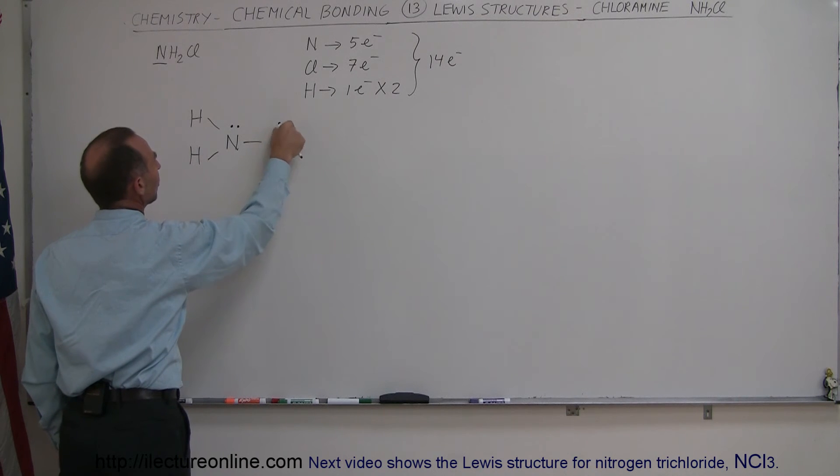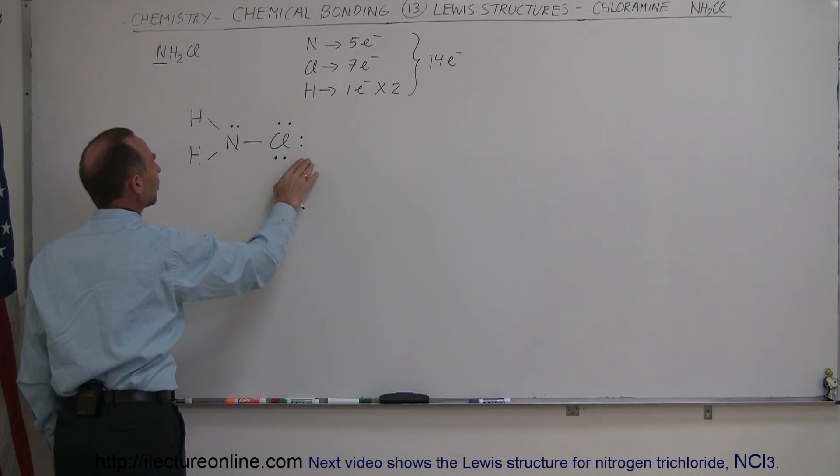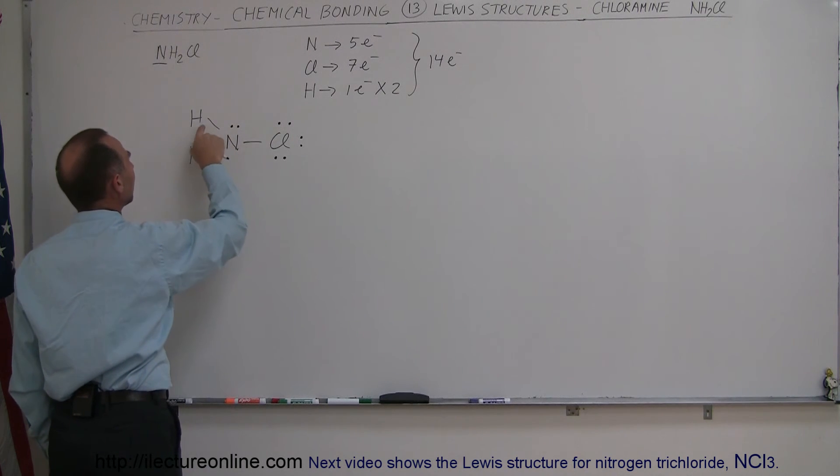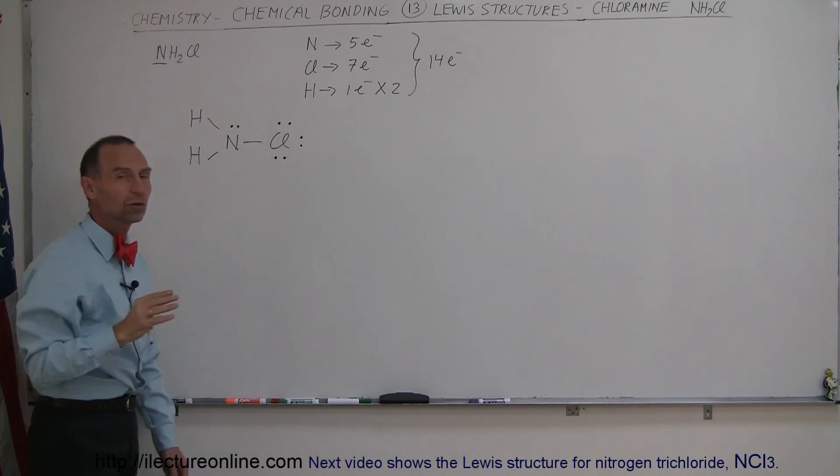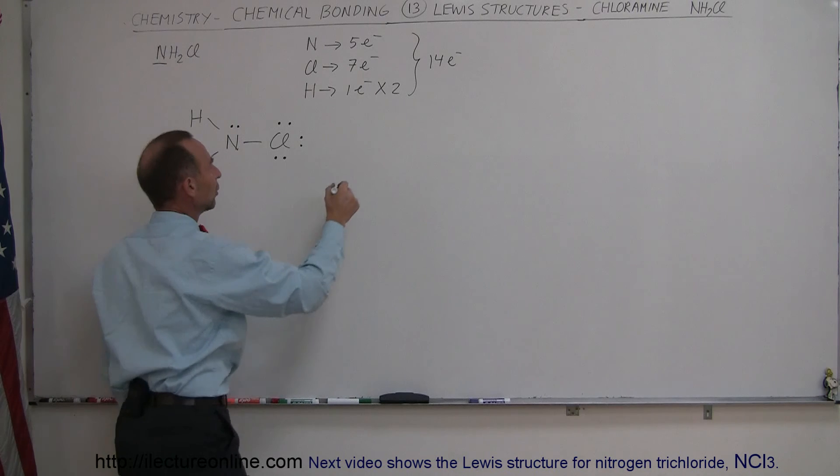Notice that chlorine, between those six and those two, part of the time it has eight, so that octet rule is followed. Two, four, six plus two is eight for nitrogen—the octet rule is followed there. And hydrogen part of the time will have two, this hydrogen part of the time will have two, so it looks like the octet rule is followed. We're good there.